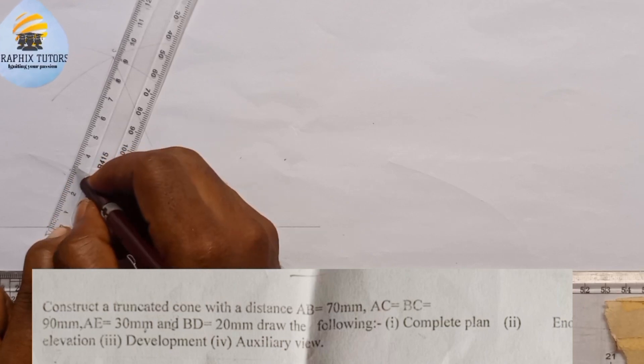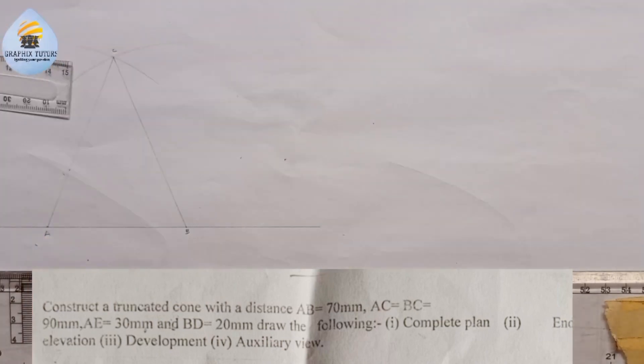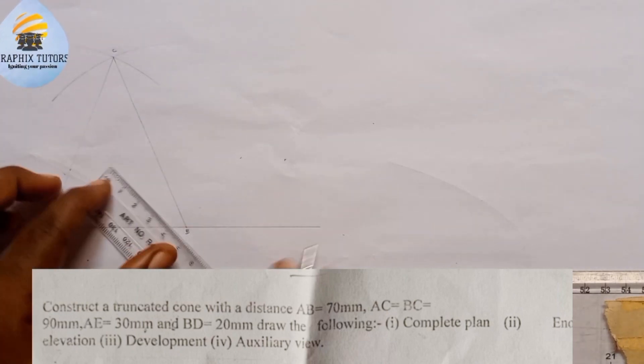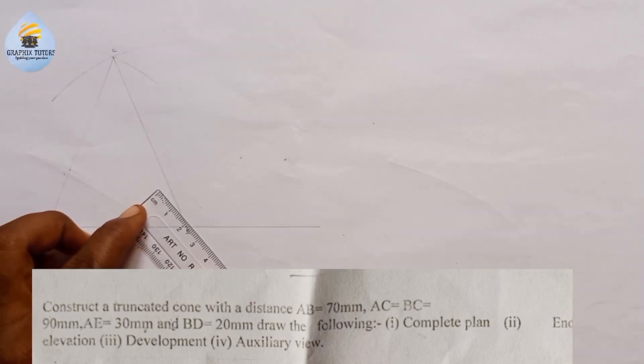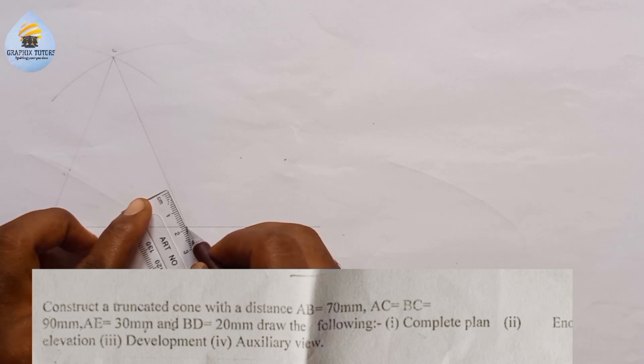Are we good? Then the next one, we are told that BD is 20. So I'm going to measure 20. From here I'll measure 20. This is from here to here, 20.